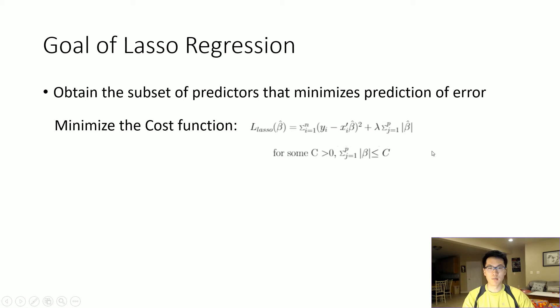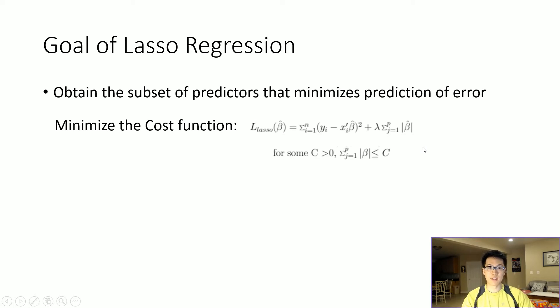Instead of having a squared term for the beta value, we're just going to have the beta value by itself. That's pretty much the only difference between lasso and ridge in the cost function.